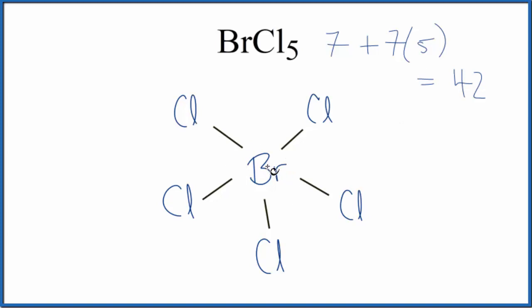Note that bromine, that has 10 valence electrons around it. That's okay though. Bromine, it can have an expanded octet, more than 8. So we're good there.